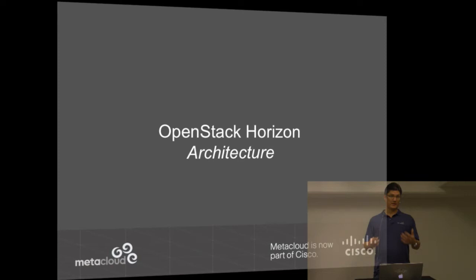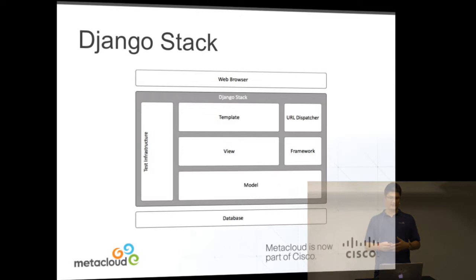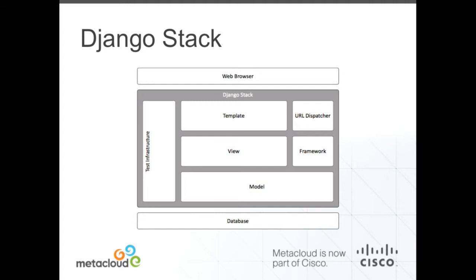I'd like to take a step back and talk about Horizon's architecture and how we've enhanced it to take advantage of client-side rendering. This is your typical Django stack. At the top you have the web browser, with requests going into the URL dispatcher, then into the view where they're serviced by a Python function or method responsible for rendering the view and returning it to the client. Typically the view will go to a model, which is the abstraction layer between the database and the view, representing database tables as objects in Python. The model sits on top of the database — MySQL, PostgreSQL, or other backends. Data retrieved from the database comes back through the model, through the view, which uses templates to render the data and returns it to the web browser.